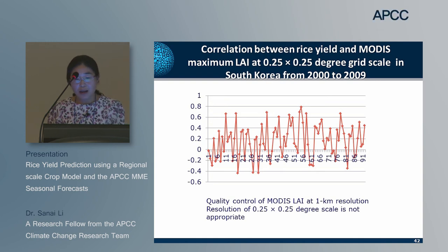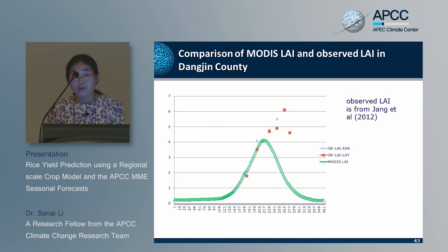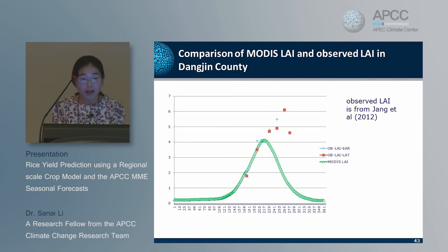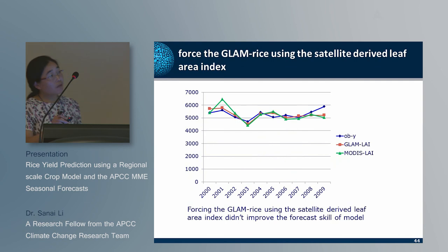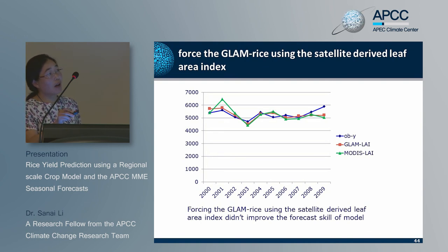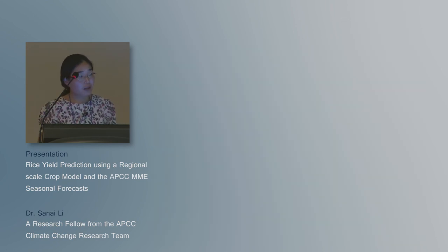Comparison of MODIS LAI and observed LAI in Danjin, South Korea shows that the observed LAI is poorly estimated by MODIS LAI. Forcing GLAM Rice with satellite-derived leaf area index: comparison of observed rice yield and simulated rice yield when GLAM model was run using GLAM LAI and MODIS-derived LAI shows that forcing GLAM Rice using the satellite-derived leaf area index did not improve the forecast performance of the model.